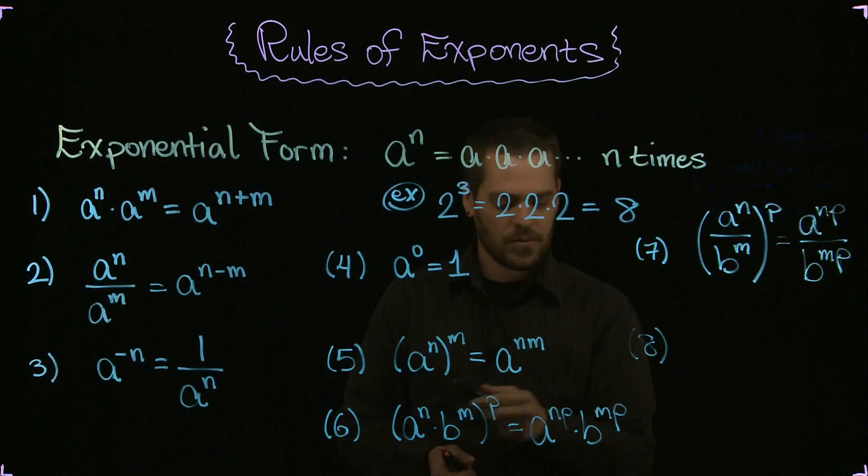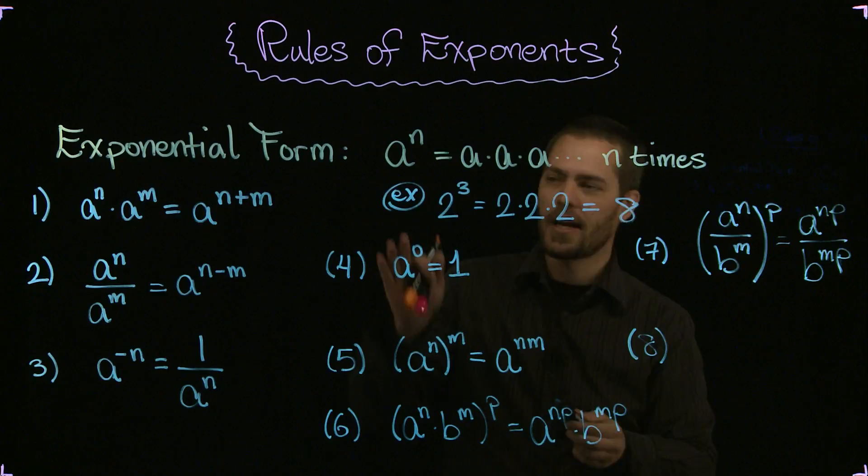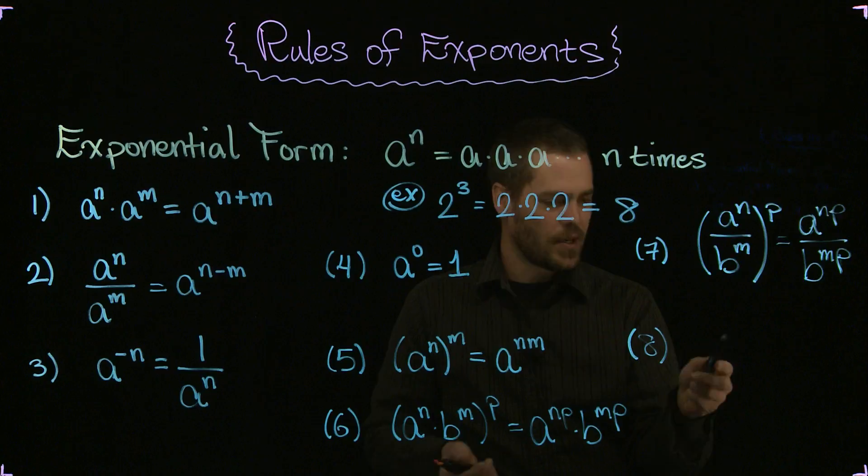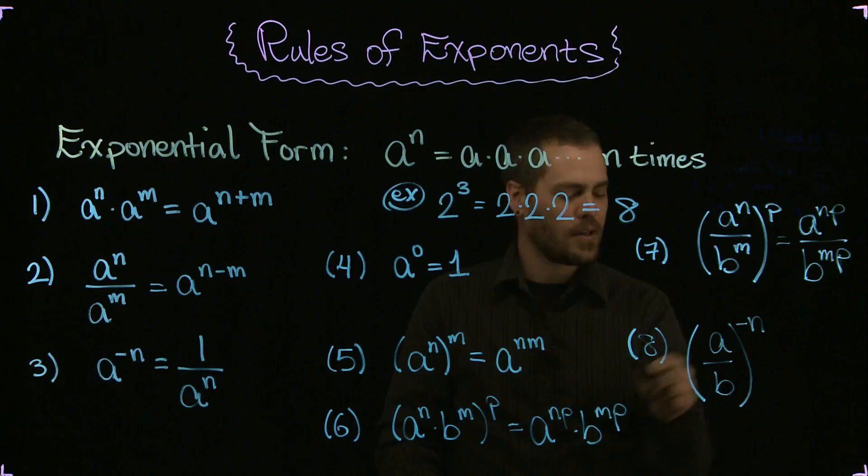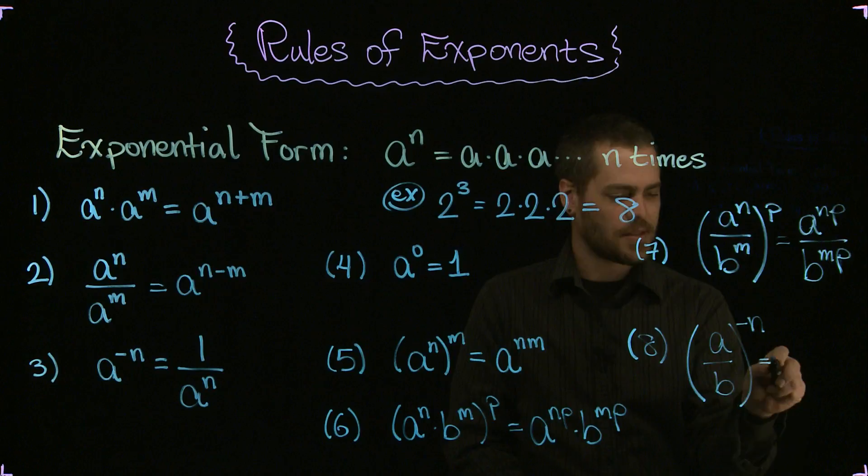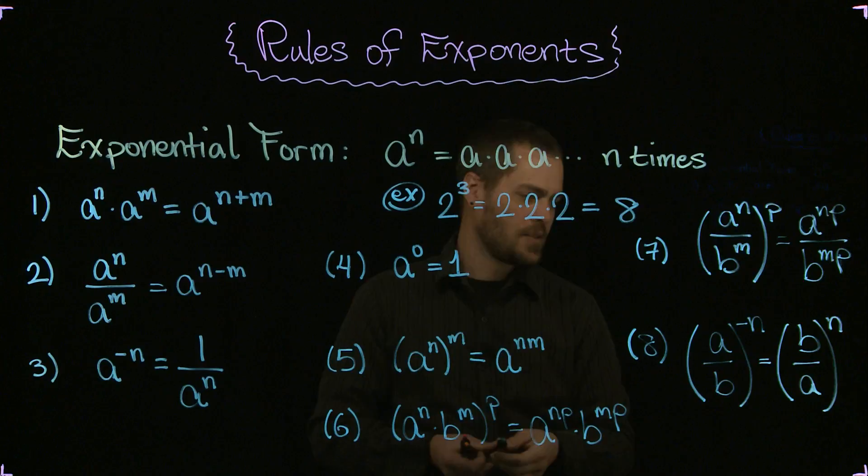And let me give you one more. Rule number eight, and this one is kind of a convenience rule. I suppose all of these are convenience rules. You could go back to the definition for any evaluation of exponents, but that gets a little ugly. So rule number eight, suppose we had some sort of fraction, a over b, to the negative power on the outside. Well, it turns out you can show that this is the same thing as the following: flip that fraction over, b over a to the positive n power, and sometimes that's convenient to use that rule.